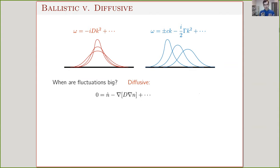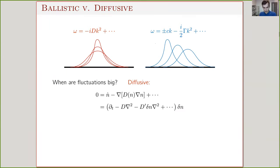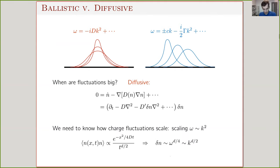The central question: when are fluctuations of density big? Starting with the diffusion equation: N_dot − D·∇²N = 0. As I mentioned, the diffusion constant can depend on charge, so we should expand things like D around the background density, leading to non-linearities. We can use a simple scaling argument: first find how density scales by looking at the density two-point function. In a diffusive system, it looks like a Gaussian whose width increases in time, with an overall power of time ensuring the conserved charge remains constant when integrated over all space.